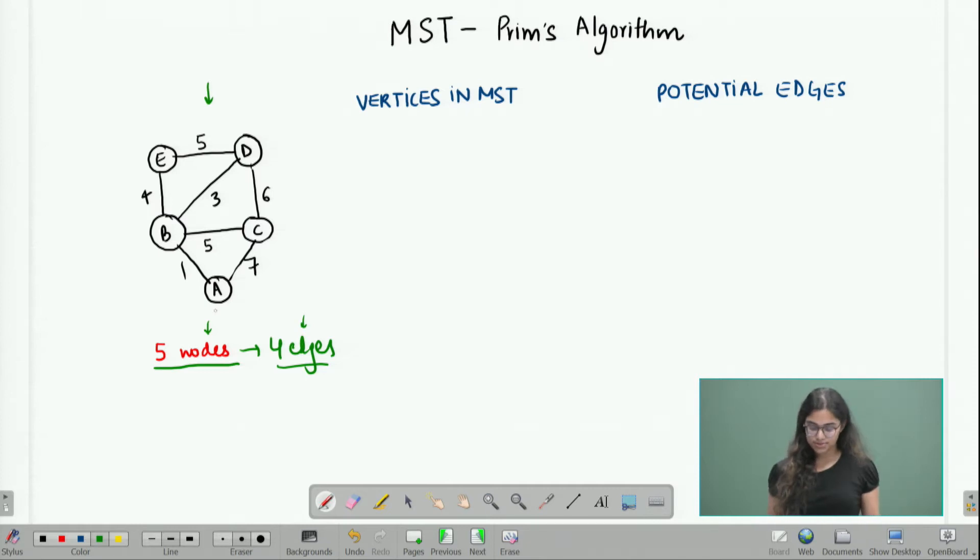Let us see how we approach this in the Prim's algorithm. While we are doing the Prim's algorithm, we try to maintain two things. First of all, we try to maintain which all vertices we have already included in my MST and the second thing we maintain is what is the list of the potential edges that I can include next in my MST. I know that I have to include 4 edges and I have to include 5 vertices. Since I know that I am going to have to include all vertices at some point in the MST, I can start by choosing any one.